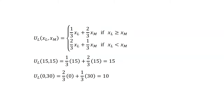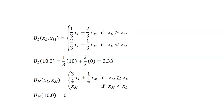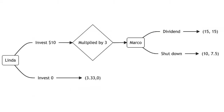Marco receives higher utility by paying the dividend to Linda. Linda also has utility from each distribution: the utility to Linda from 15 each equals one-third times 15 plus two-thirds times 15, which equals 15. The utility to Linda of Marco keeping all the money (Linda gets nothing) equals two-thirds times zero plus one-third times 30, which equals 10. So Linda would prefer that Marco pay a dividend. If Linda does not invest, she keeps $10 and Marco has nothing, giving Marco a utility of zero. Putting those payoffs into the extensive form of the game: Marco chooses to return the dividend (utility 15 over shutting down at 7.5), and as a result Linda will invest for utility 15 rather than not invest for utility 3.33.